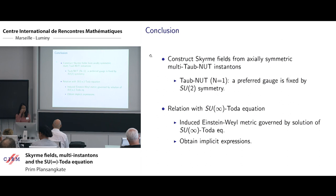The conclusion of the work is that we've constructed Skyrme fields from axially symmetric multi-Taub-NUT instantons. For the N equal to one, for the one center Taub-NUT case, a preferred gauge is fixed by the symmetry. But for the multi-Taub-NUT case, we still have to find a reason for preferred gauge. We also look at the induced Einstein-Weyl metrics on the space of orbits of the axial symmetry, which is governed by the solution of SU infinity Toda equation. And then we obtain some implicit expressions of the solution. Thank you.